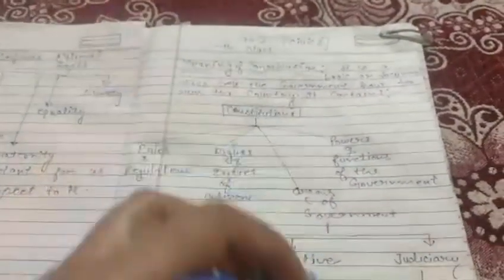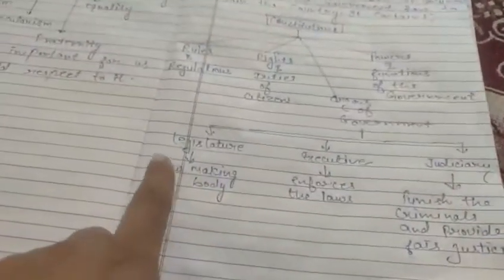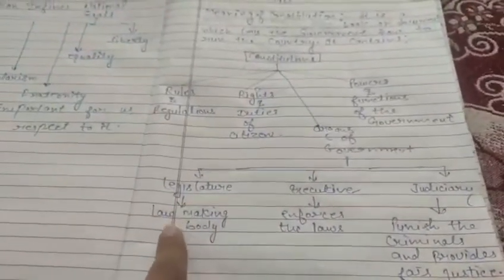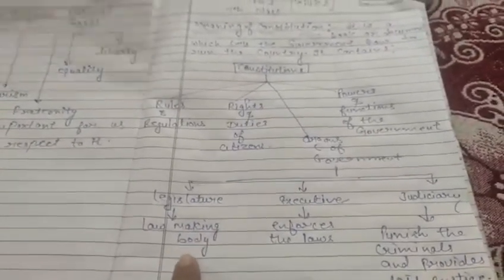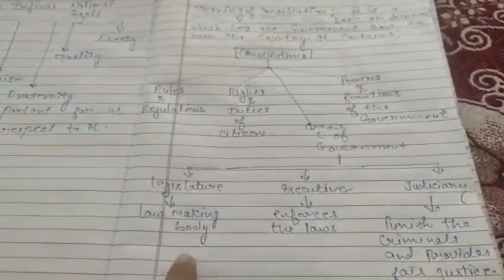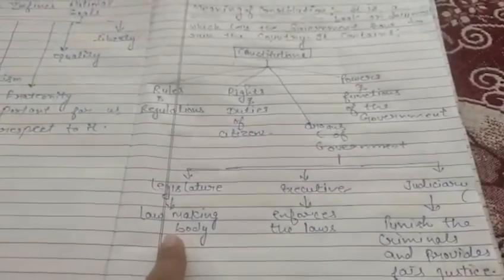In organs of government it will contain first one: legislature. It is a law making body at the central level that makes laws, rules and regulations, duties and rights of a citizen.